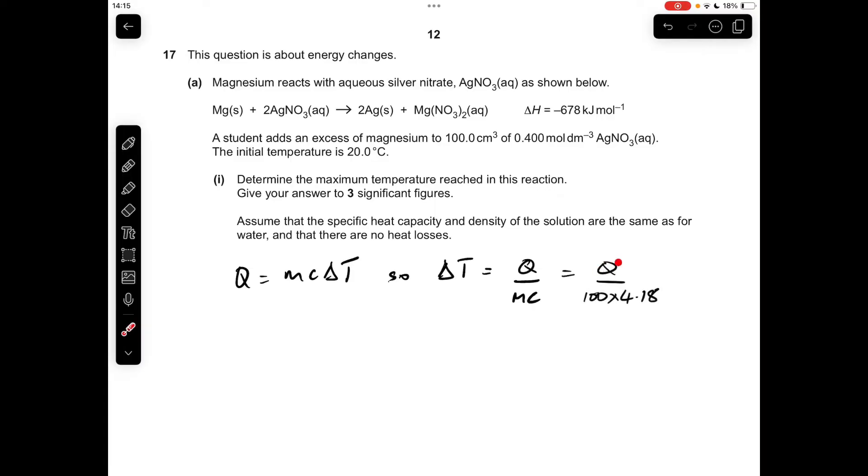The tricky bit with this question is calculating the Q value we need to use. We've obviously got M, the mass of the solution is 100 grams because it was 100 cm³ of solution, and the specific heat capacity we're told to be the same as that for water, so it's 4.18.